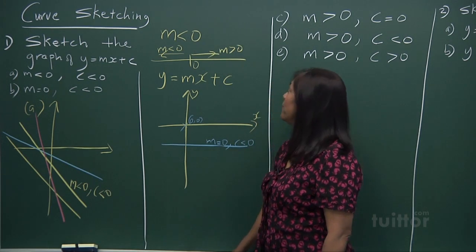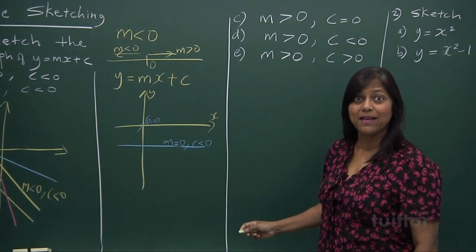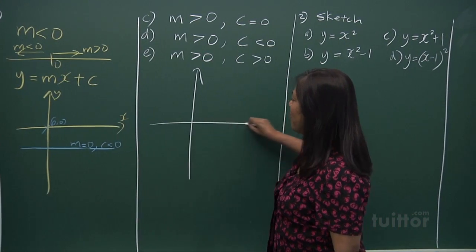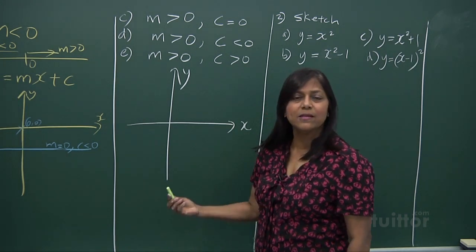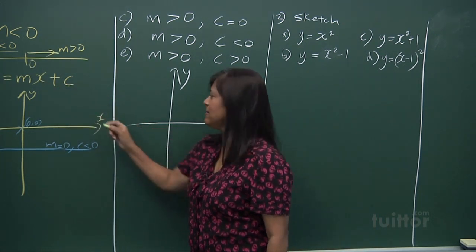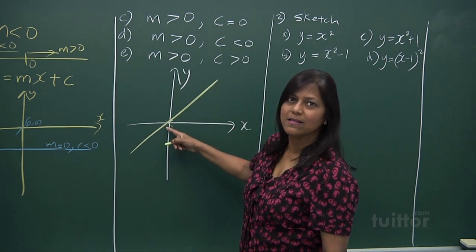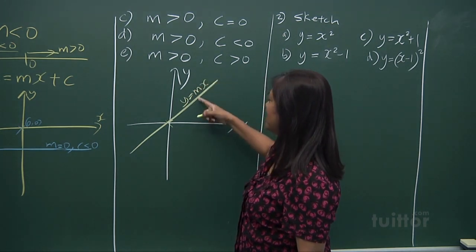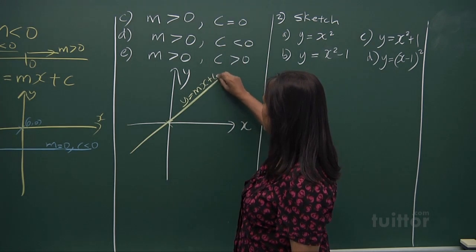Now, what happens if we have m greater than 0 and c equal to 0? This is the x-axis, this is the y-axis. m greater than 0 means a positive gradient. c equal to 0 means that when x is 0, y is c, and y will be 0 too. So the graph passes through the origin — y equals mx — and c here is 0.